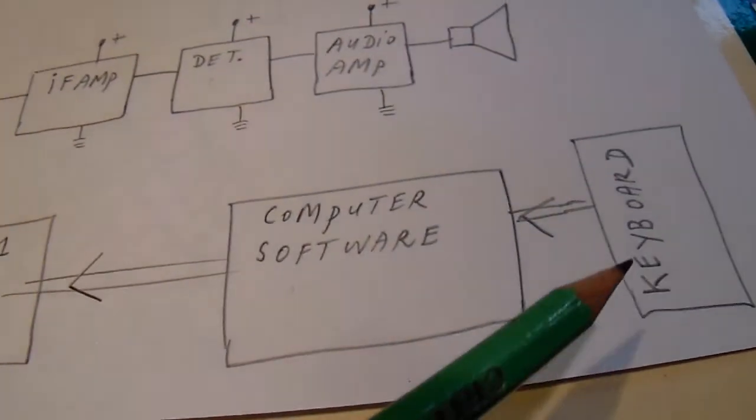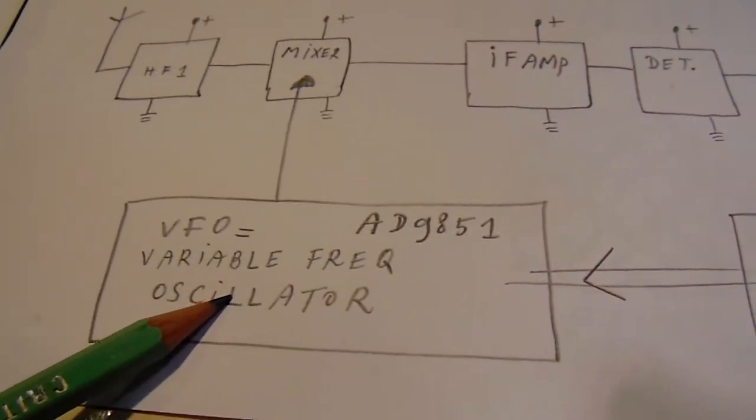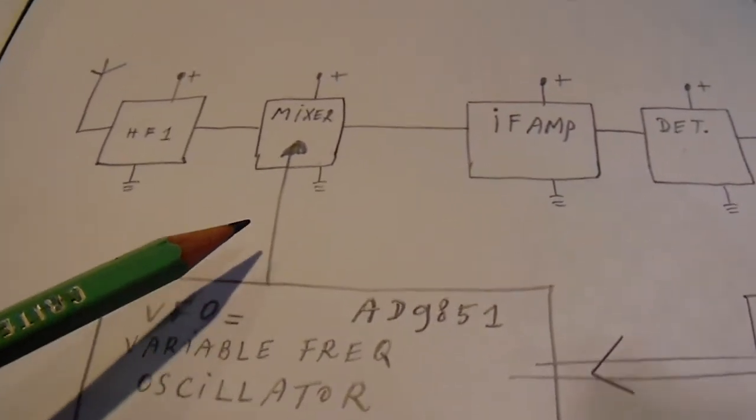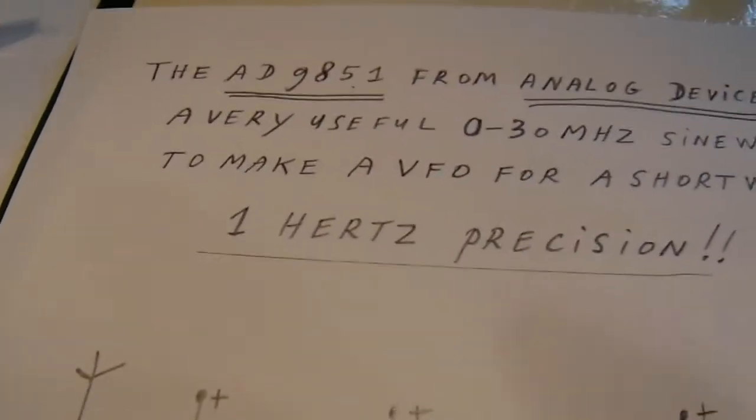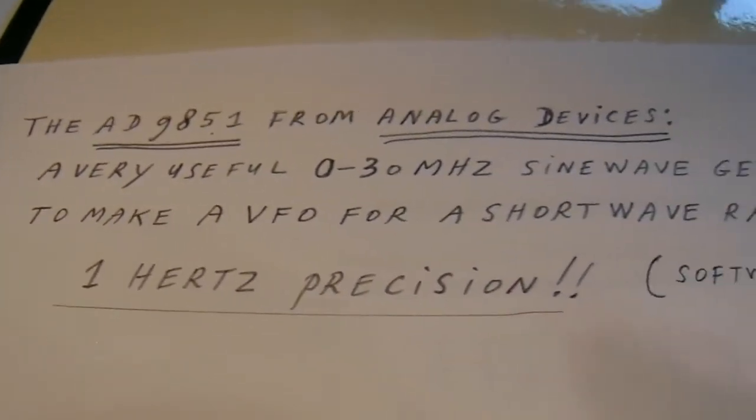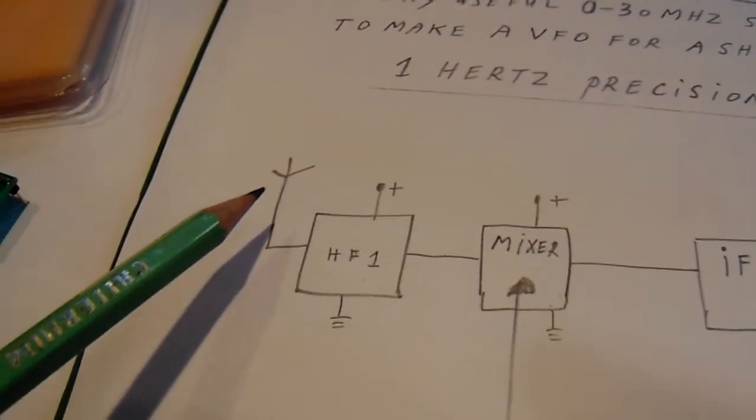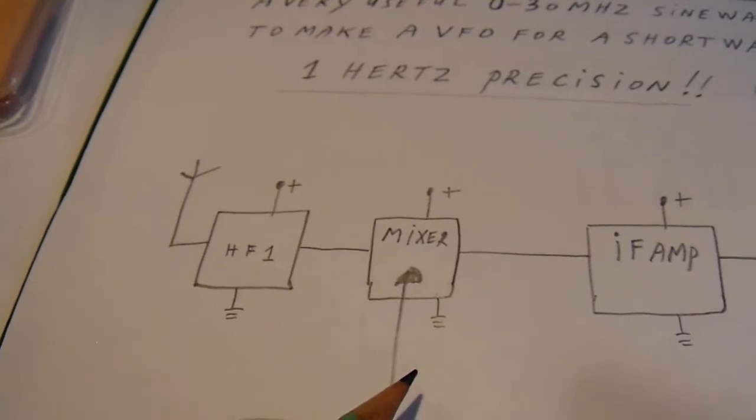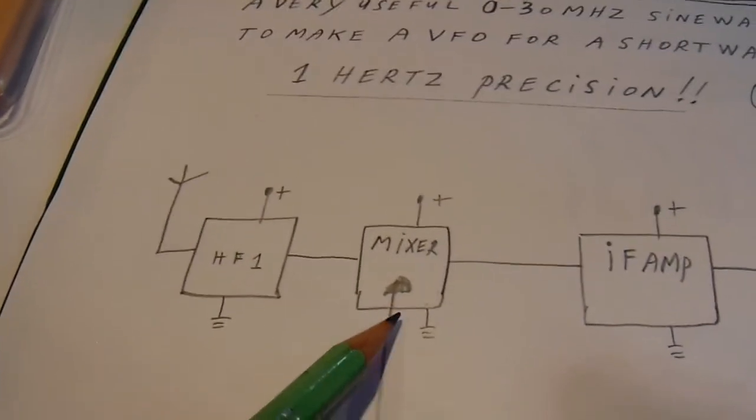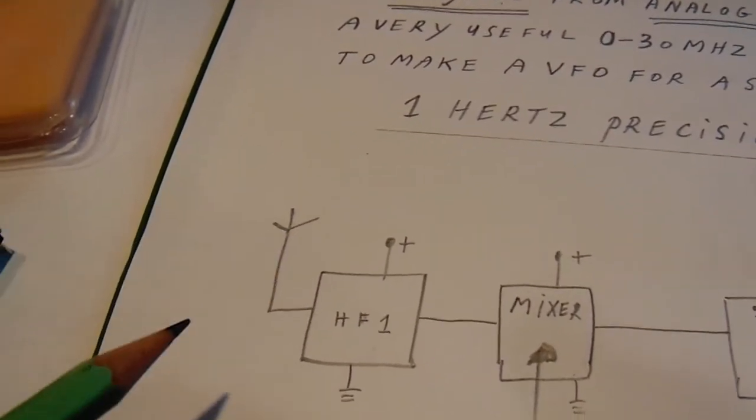And then you have the ideal situation where you send into the VFO an exact frequency, exact on one hertz. That's a very good thing from this chip. That means you can receive here in your shortwave radio the very exact frequency that's available on the antenna.